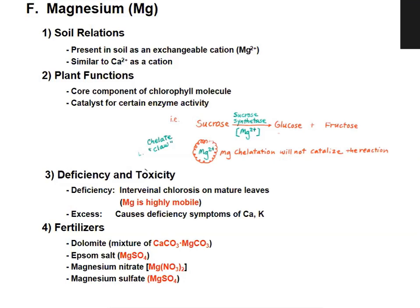The deficiency symptom of magnesium is interveinal chlorosis of the chlorophyll molecule. Toxicity of magnesium causes deficiency of calcium and potassium due to an antagonistic relationship between these elements.